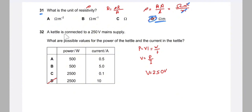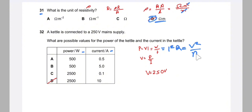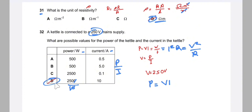Question 32: a kettle is connected to a 250 V supply. We need possible values of power and current. Using P = VI, we need P/I = 250 V. Checking options: whichever gives power divided by current equal to 250 is correct. The answer is D, where P/I = 250 V matches the supply voltage.